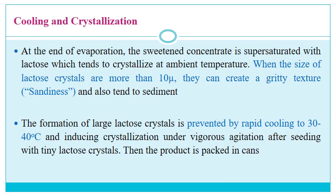The final stage is cooling and crystallization, followed by packing. At the end of evaporation, the sweetened concentrate is supersaturated with lactose, which tends to crystallize at ambient temperature. When the size of lactose crystals exceeds 10 microns they create a gritty texture called sandiness, which is undesirable. The formation of large lactose crystals is prevented by rapid cooling to 30 to 40°C and by inducing crystallization under vigorous agitation after seeding with tiny lactose crystals. The product is then packaged in cans or by other techniques.